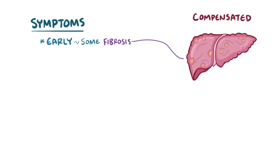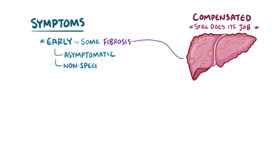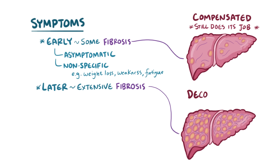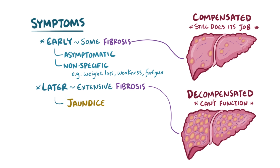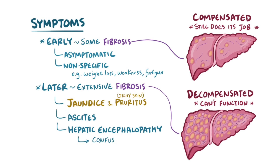Early on with a small amount of scarring and fibrosis, we call it compensated cirrhosis, meaning the liver can still do a lot of its job. Someone with cirrhosis might not have any symptoms, or they might have nonspecific symptoms like weight loss, weakness, or fatigue. Later on with extensive scarring, the liver progresses to decompensated cirrhosis and can't function normally. At this point, symptoms like jaundice and pruritus, ascites, hepatic encephalopathy causing confusion, and easy bruising from low coagulation factors start to develop.